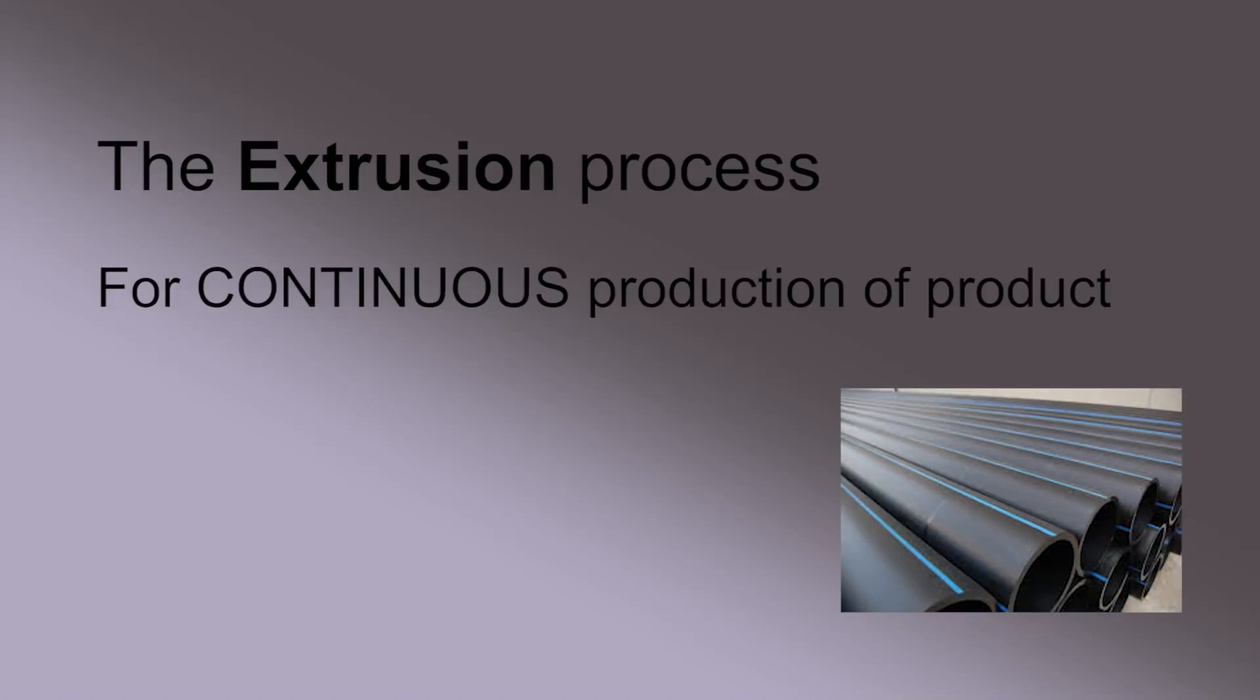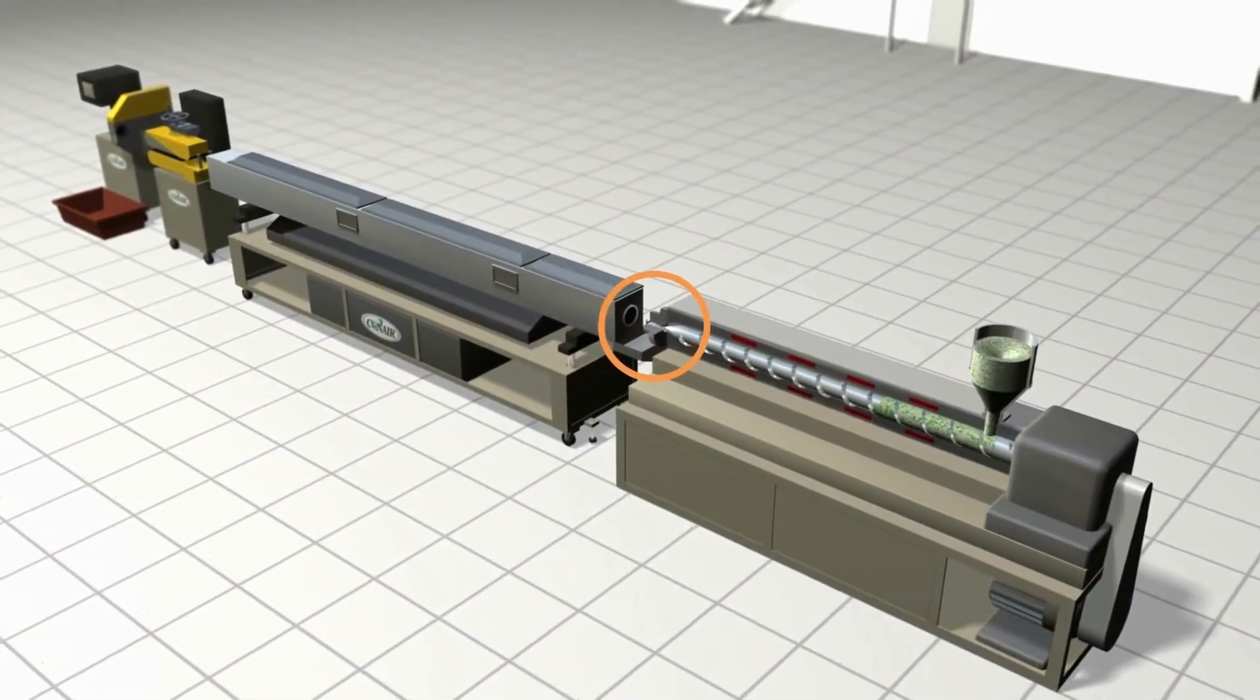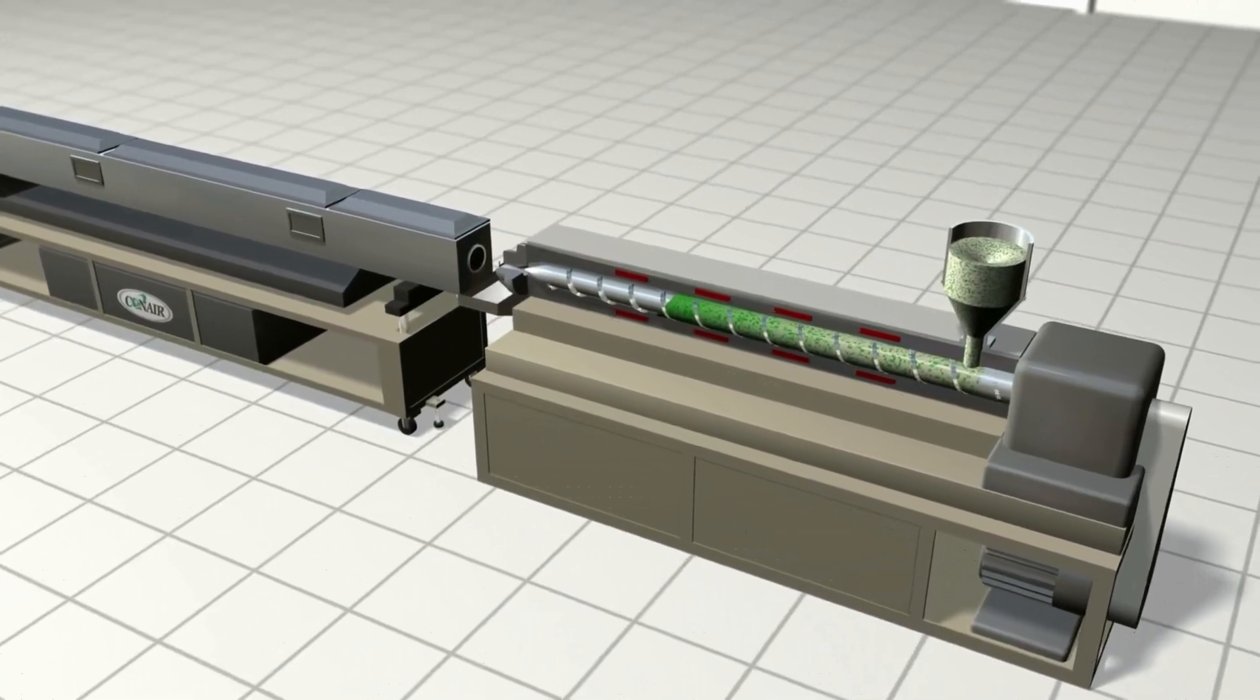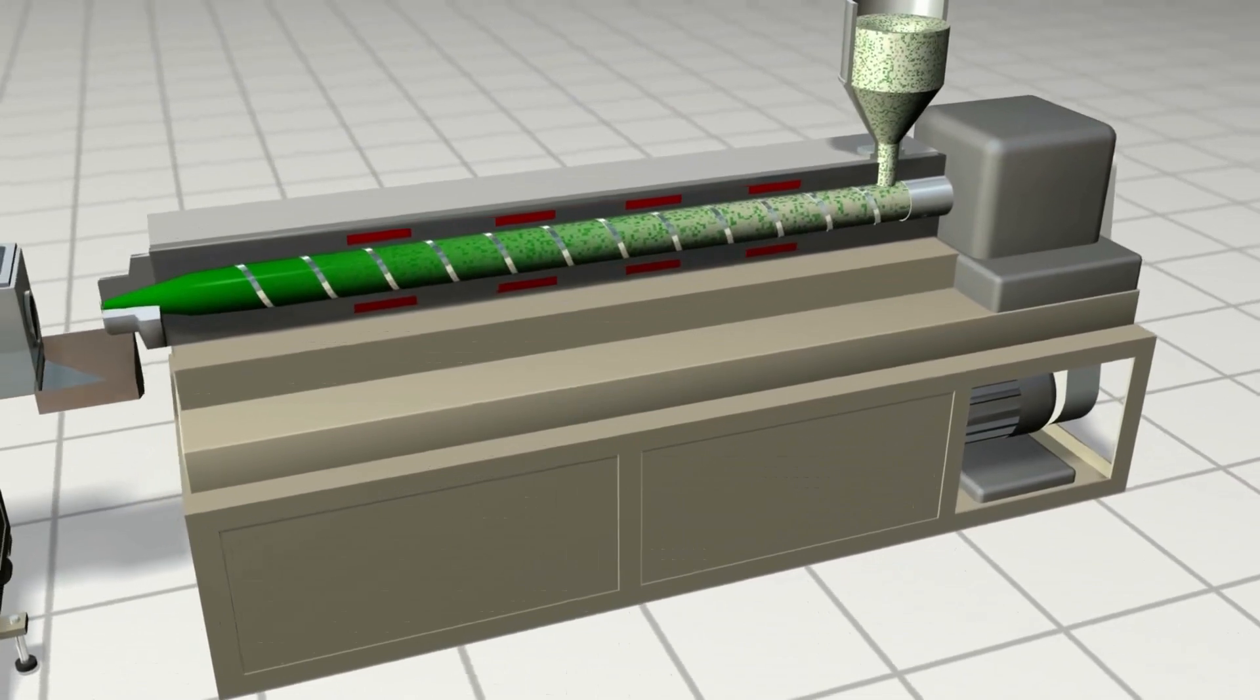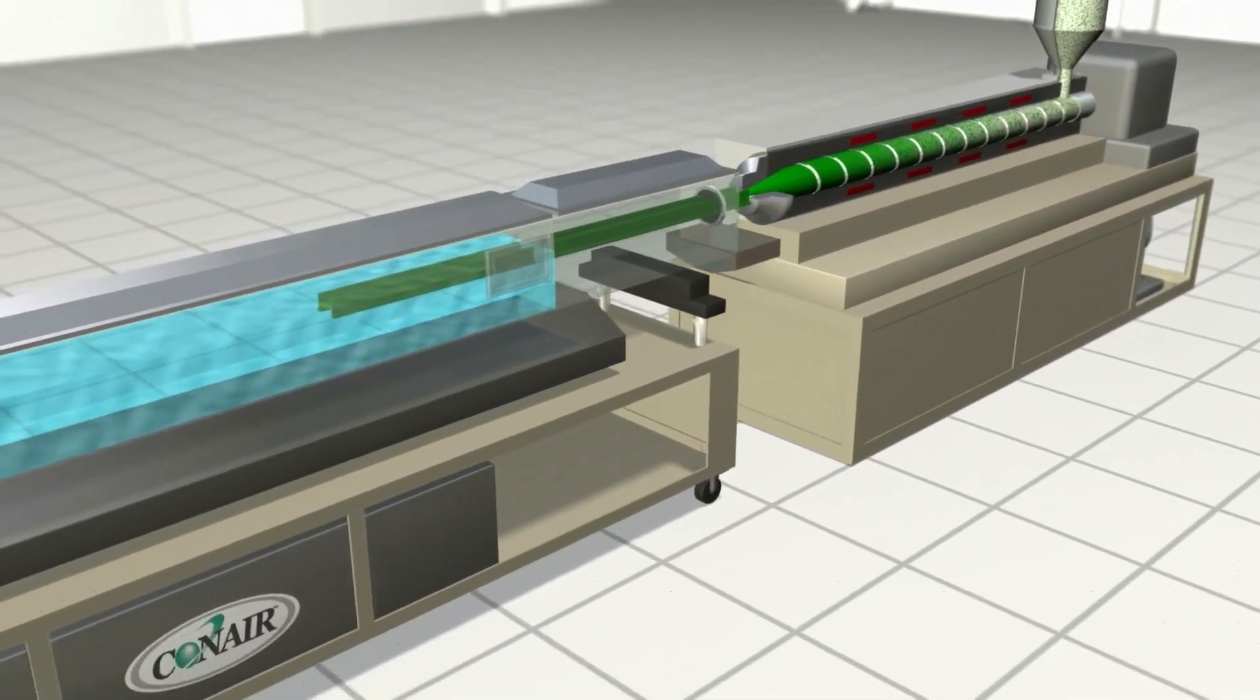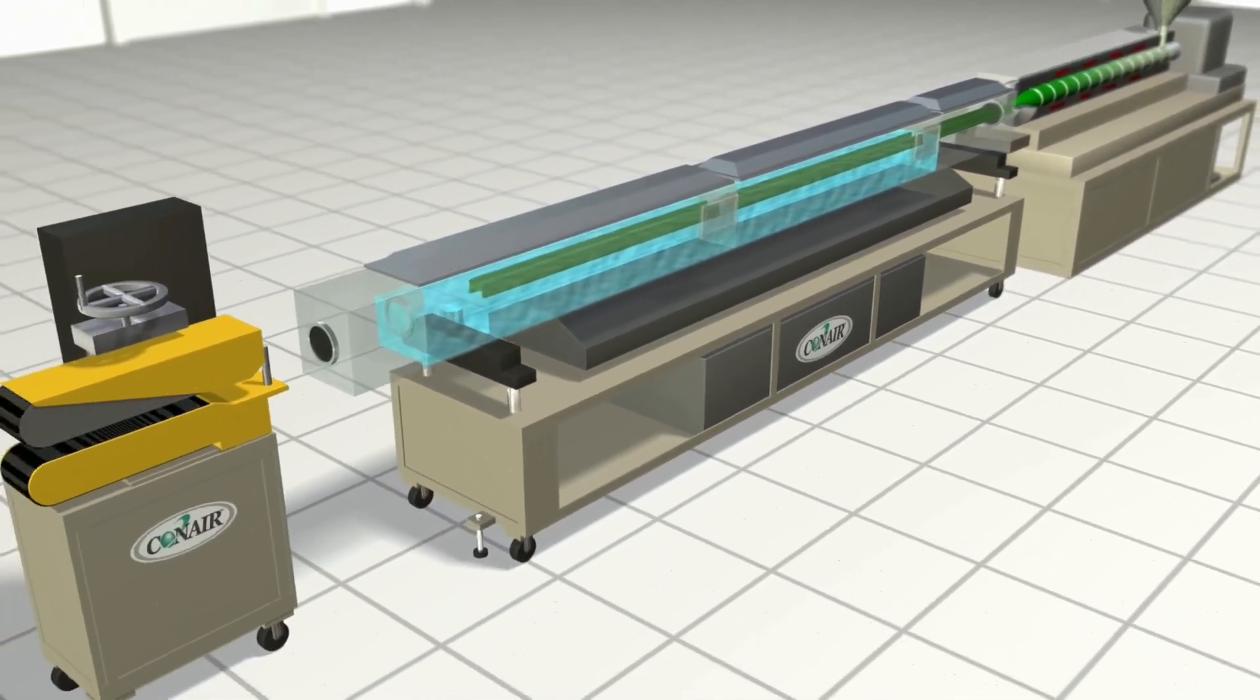Extrusion uses a die, a hollow form that molten plastic is pushed through to create its specific shape and thickness. A water bath or spray chamber then cools the extruded shape and often provides pressure and/or vacuum controls to properly size the product as it passes through.